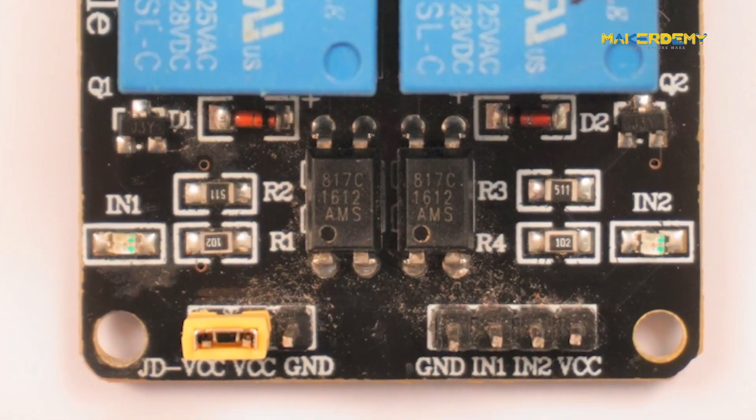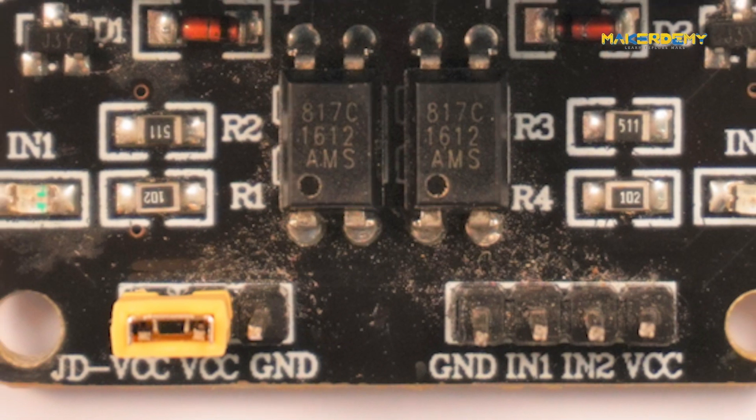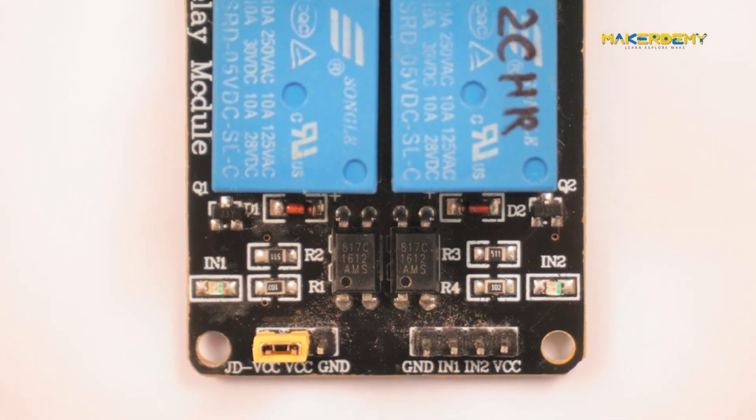If you look very closely, the two black four-pin SMDs are labeled as 817C1612AMS. They are known as optocouplers. This four-pin chip will always be added in any module that has a relay. So what is the relation between a relay and an optocoupler?